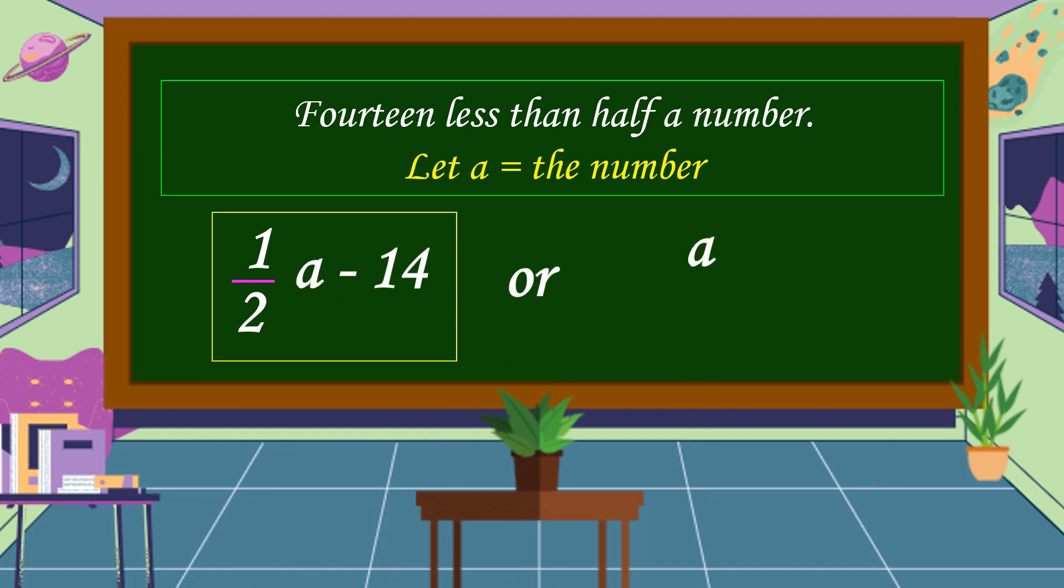Or we can write like this: A over 2 minus 14.